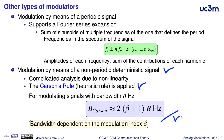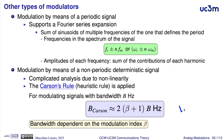Carson's rule states that the bandwidth of a frequency or phase modulated signal is approximately equal to two times (the modulation index plus one) times the bandwidth in Hz of the modulating signal — the bandwidth of the information being transmitted. Evidently, the higher the value of the modulation index, the higher the bandwidth of the modulated signal, and we can have several times the bandwidth of the information signal.